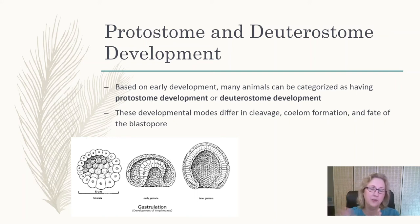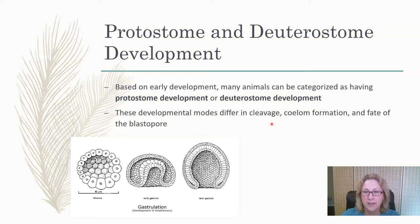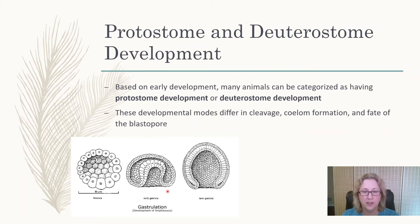What protostome and deuterostome represent are differences in: the way the fertilized egg first starts to divide (cleavage), how the coelom forms from the mesoderm, and what happens to the blastopore — the hole that forms during gastrulation. This blastopore ends up becoming either the mouth, the anus, or it closes up and forms nothing.